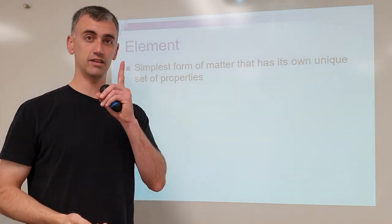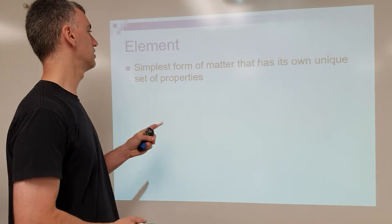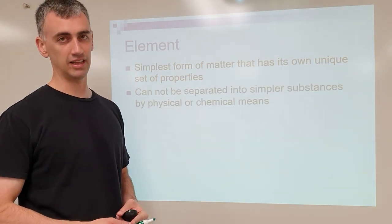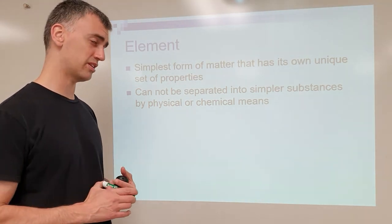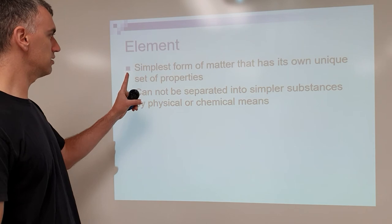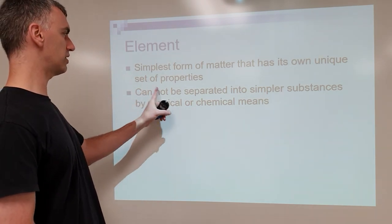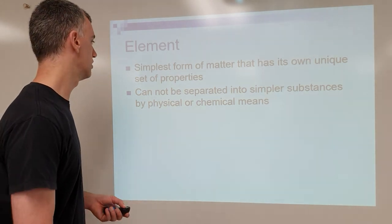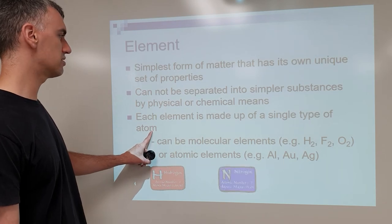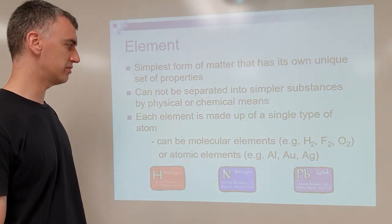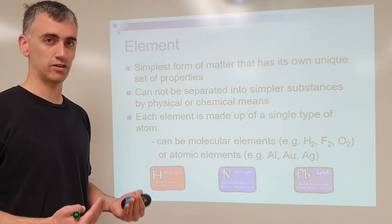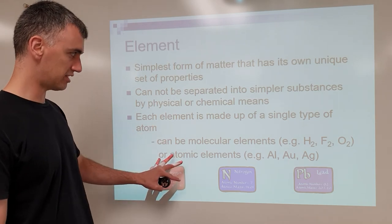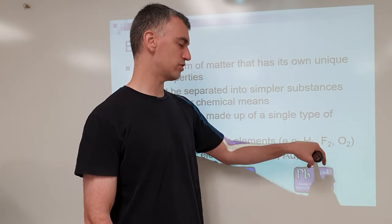An element — which again is only one type of atom present — is the simplest form of matter that has its own unique set of properties. You can't easily break an atom down into anything smaller. You can using a particle accelerator or a nuclear explosion, but under normal natural conditions, we say atoms cannot be broken down. That's why the Greeks called them 'atoms' — atom means 'uncuttable' in Greek. Each element has its own symbol, found on the periodic table of elements. If it's not on the periodic table, it's not an element. Water is not on the periodic table because it's made of different kinds of atoms stuck together.